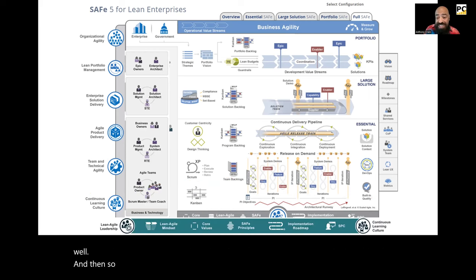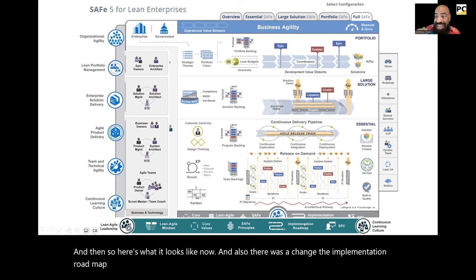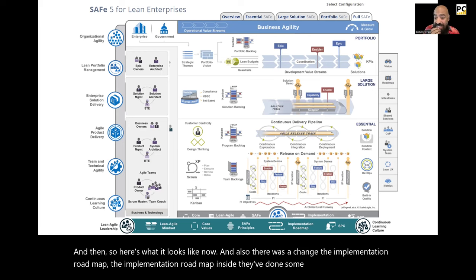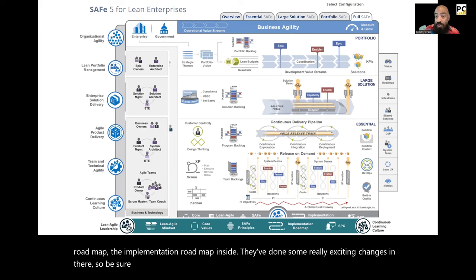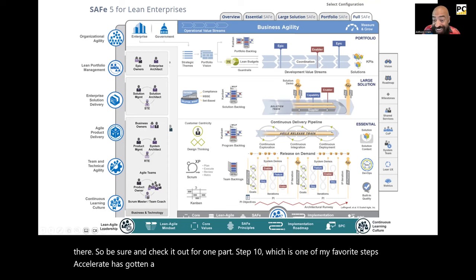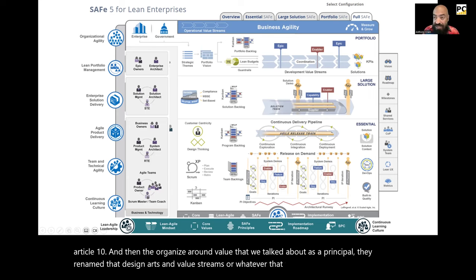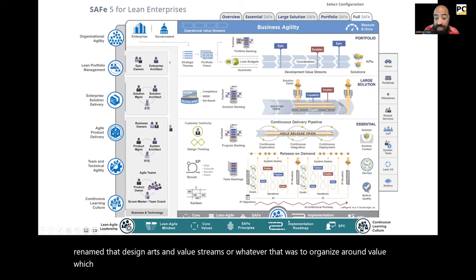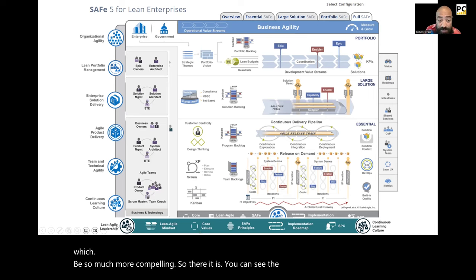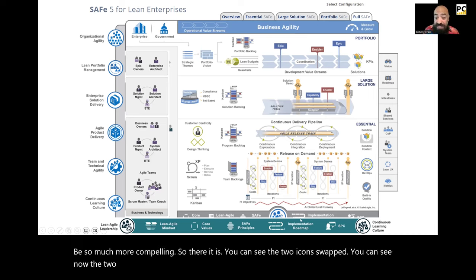And also there was a change to the implementation roadmap — they've done some really exciting changes in there. Step 10, 'Accelerate,' has gotten a new article and they talk about continuous learning culture a lot in that article. And they renamed 'design ARTs and value streams' to 'organize around value,' which is so much more compelling. You can now see the two icons swapped and the two competencies that are fundamental instead of one.